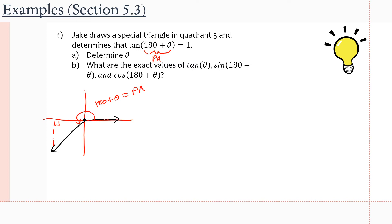Part A asks us to determine θ. In this case, we go from the initial arm all the way to 180 and we pass it by an amount θ. So θ is actually going to be our related acute angle. The question tells us that tan of the principal angle equals one, so we know our opposite over adjacent ratio is going to be one.